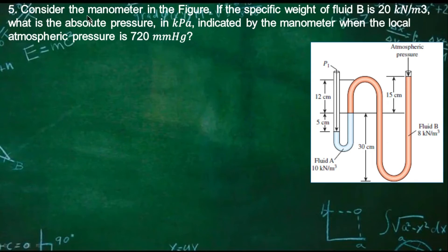Consider the manometer in the figure. If the specific weight of fluid B is 20 kilonewton per cubic meter, what is the absolute pressure in kilopascal indicated by the manometer when the local atmospheric pressure is 720 millimeter of mercury?